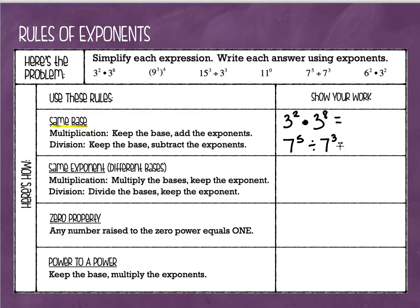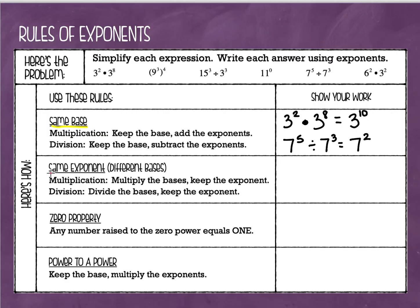Now let's look at our rules. When I am multiplying with the same base, I am going to keep the base and add the exponents. So three stays the same and two plus eight equals ten — my answer would be three to the tenth power. For a division problem, we keep the base and subtract the exponents. So I keep that seven and five minus three equals two: seven squared.